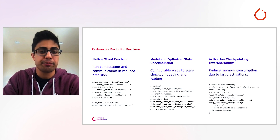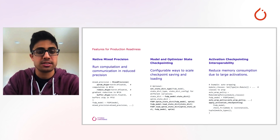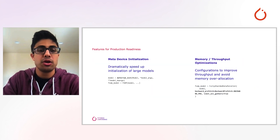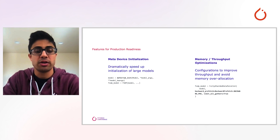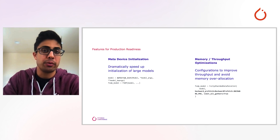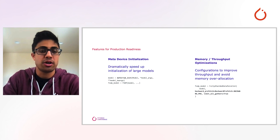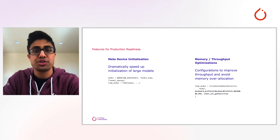Activation checkpointing is another scaling technique that reduces memory usage due to large activation sizes, and we've integrated this to work well with FSDP. These APIs are easy to use and require only minimal configuration change to your training script. We've also enabled meta device initialization for FSDP wrapped models. Previously, users would have to initialize large models on the CPU before wrapping with FSDP as they did not fit on the GPU, but they can now be initialized on a meta device and materialized layer by layer onto the GPU.